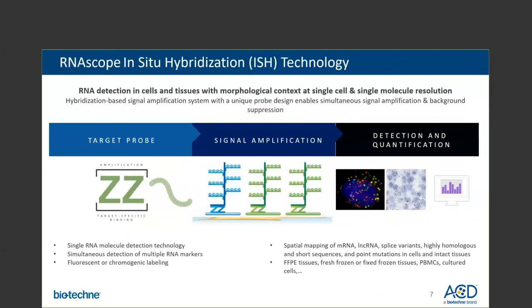The RNA Scope technology is an ideal spatial analysis solution to interrogate complex tissues. It is a highly specific and sensitive method to detect RNA biomarkers in cells and tissues with morphological context at the single-cell level. It consists of three parts: a unique target probe that ACD designs against your sequence of interest, an amplification system that generates a high signal-to-noise ratio, and visualization of single RNA molecules as dots. The assay allows for spatial mapping of mRNA, long non-coding RNA, splice variants, and highly homologous sequences in cells and intact tissue, visualized with either fluorescent or chromogenic labels.